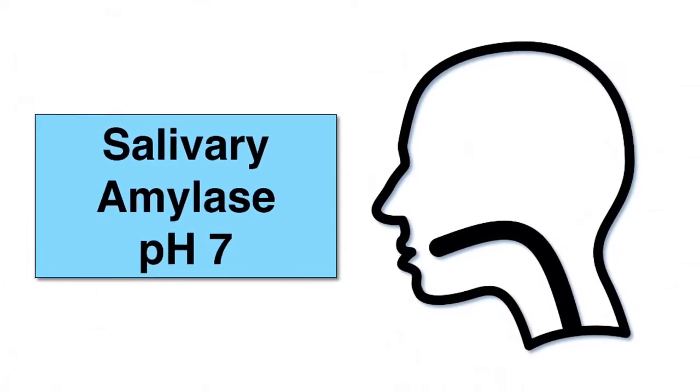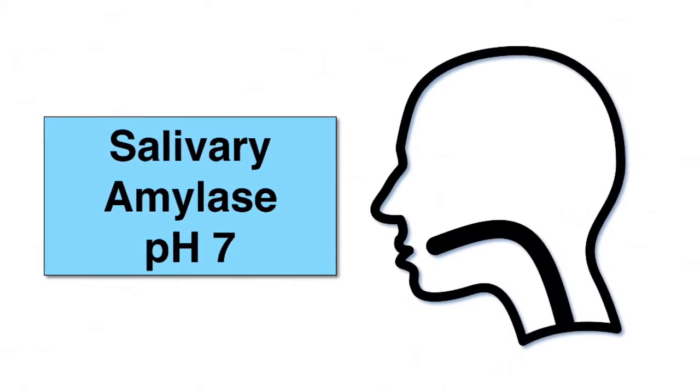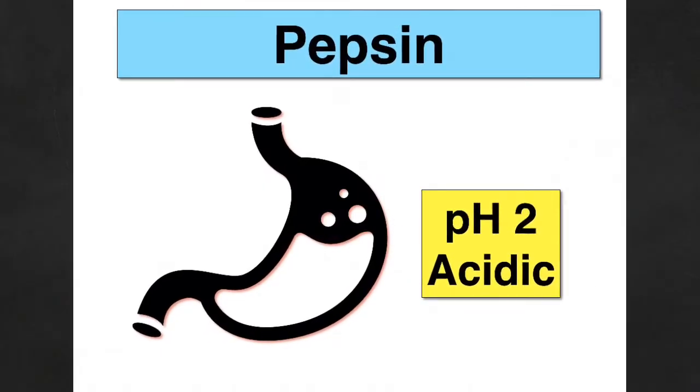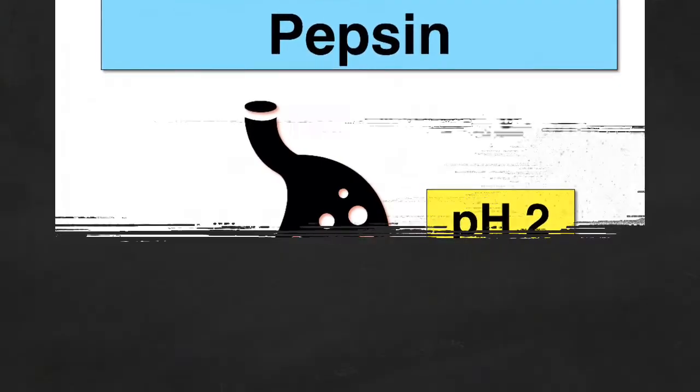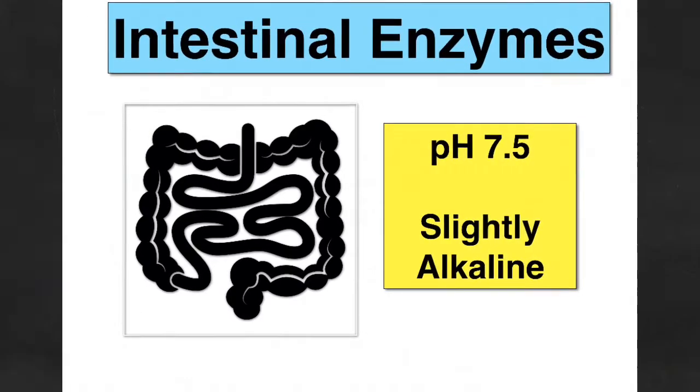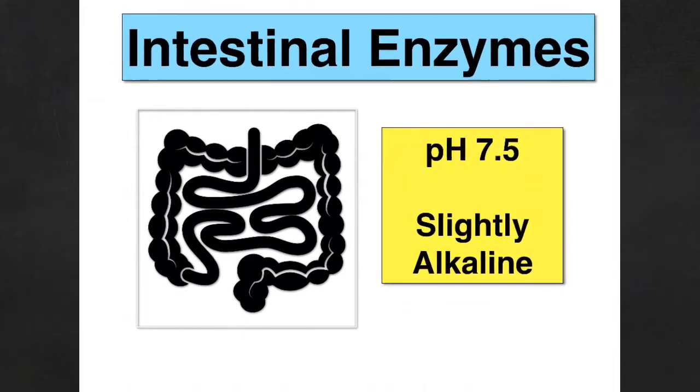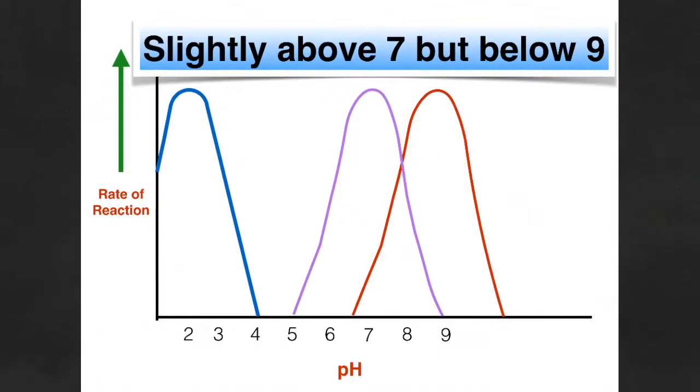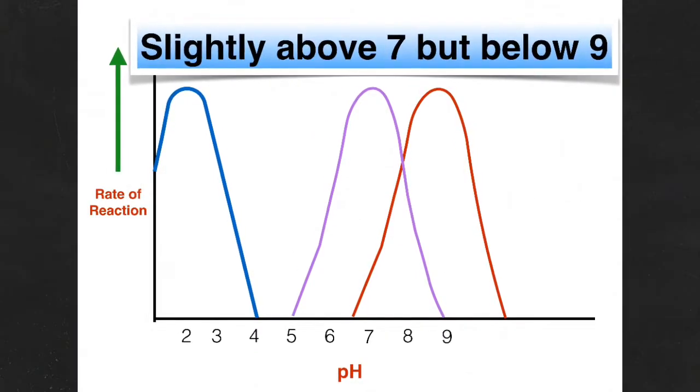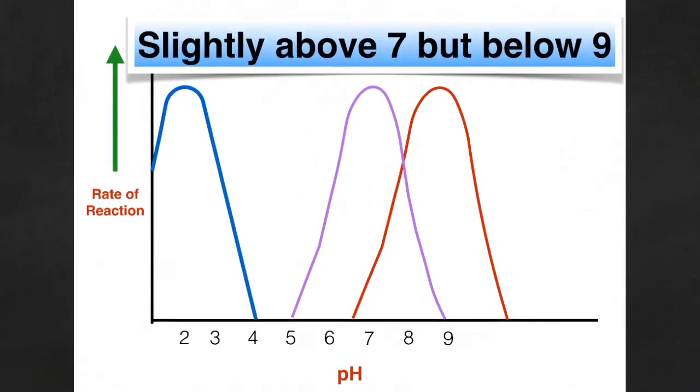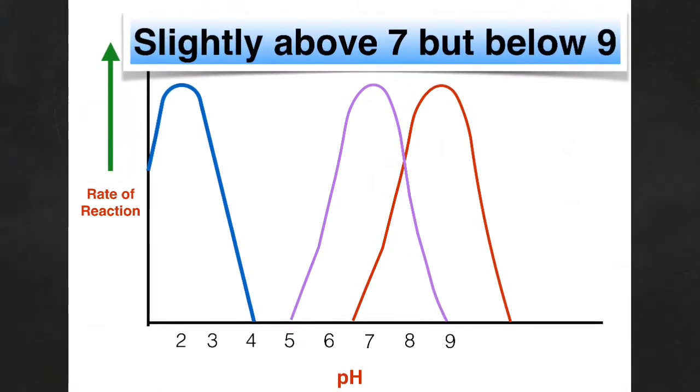Salivary amylase produced in the mouth by the salivary glands, its optimal pH is pH 7. Whereas pepsin, that protease in your stomach, its optimal pH is 2, acidic. Most of those intestinal enzymes have an optimal pH of 7.5, so slightly alkaline. The enzymes found in the intestines are all very different. However, they all seem to work best in a slightly alkaline environment.